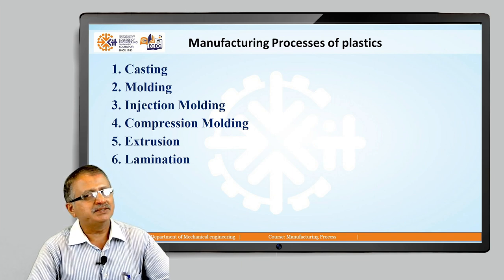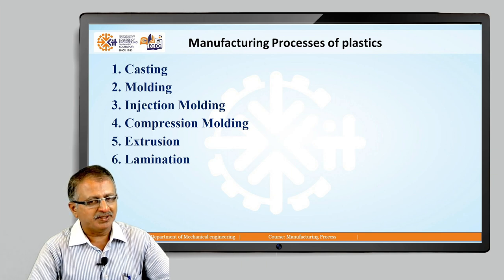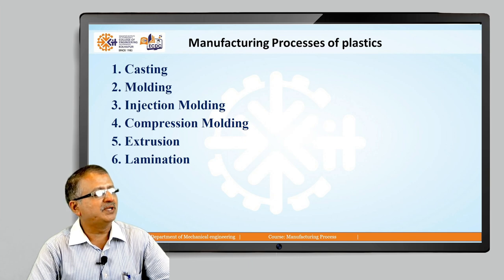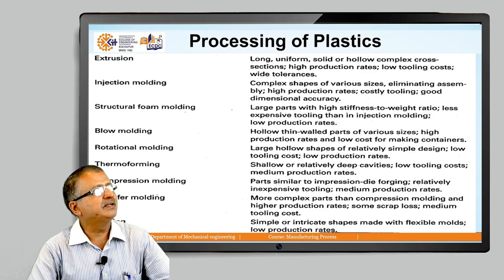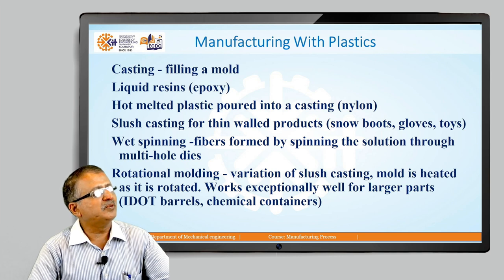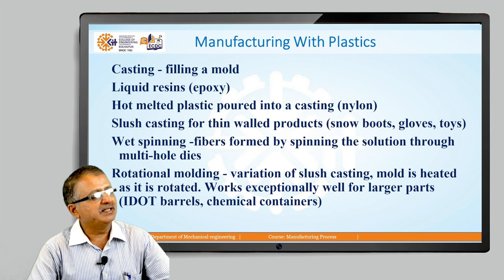For the manufacturing and processing of plastics, there are various methods you can utilize. The most common is casting, second is molding, third is injection molding, fourth is compression molding, fifth is extrusion, and sixth is lamination. Each method has its unique characteristics and fulfills our ultimate objective requirements. Casting involves filling a mold with hot melted plastic which is poured in and the required casting is produced.